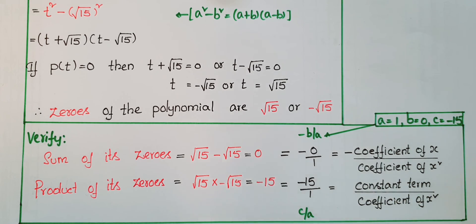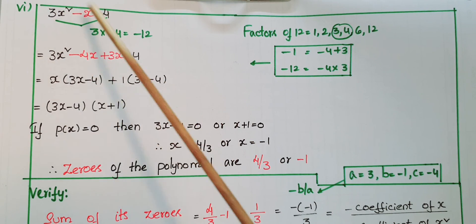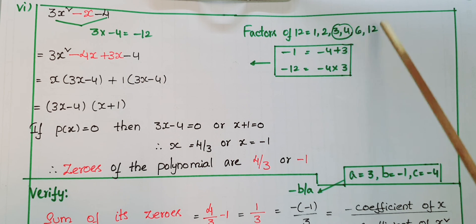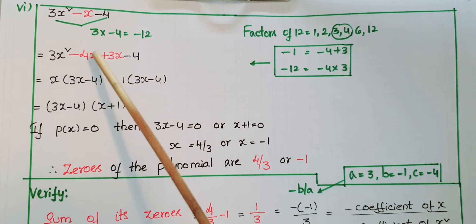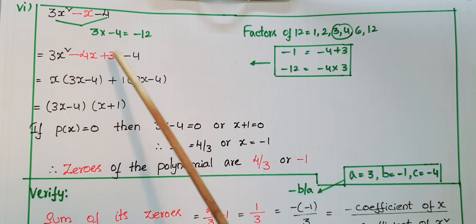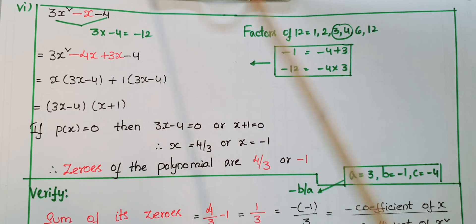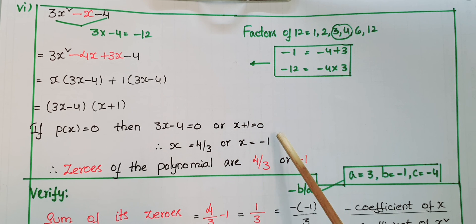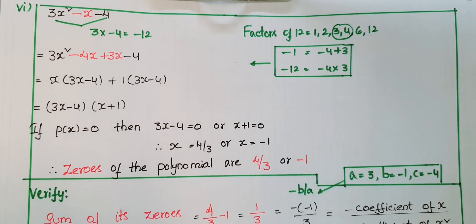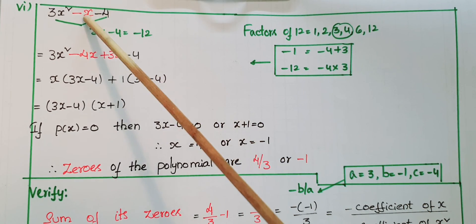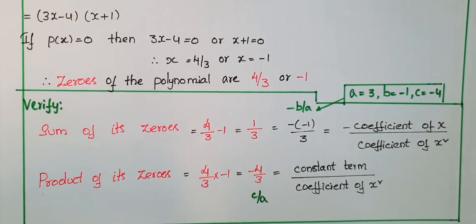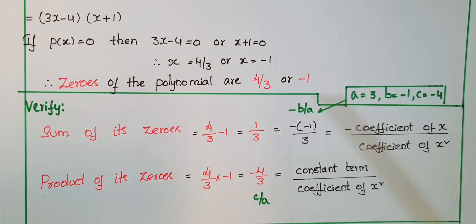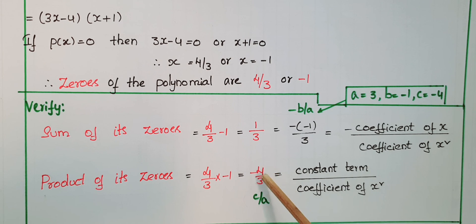Last polynomial: 3x² - x - 4. Here 3 × (-4) = -12. Factors: choose -4 and 3 (sum = -1, product = -12). So 3x² - 4x + 3x - 4 = (3x - 4)(x + 1), giving x = 4/3 or x = -1. Here a = 3, b = -1, c = -4. Sum of zeros = 4/3 + (-1) = 1/3, and -b/a = 1/3, verified. Product = (4/3)×(-1) = -4/3, and c/a = -4/3, verified.